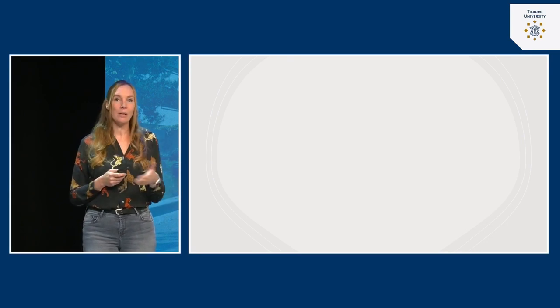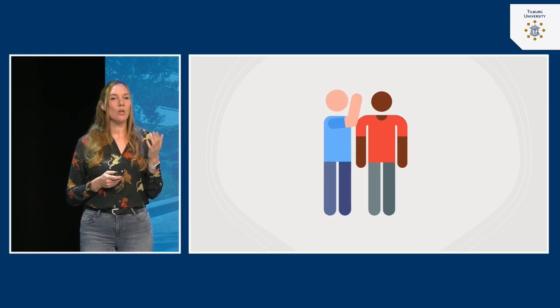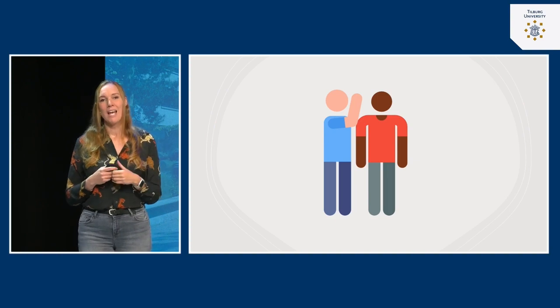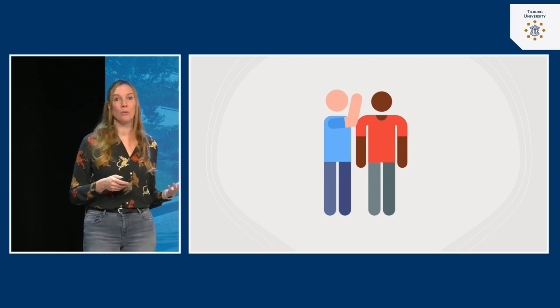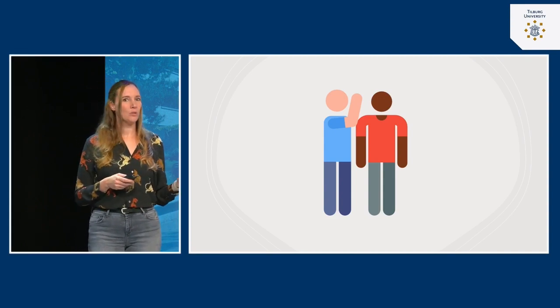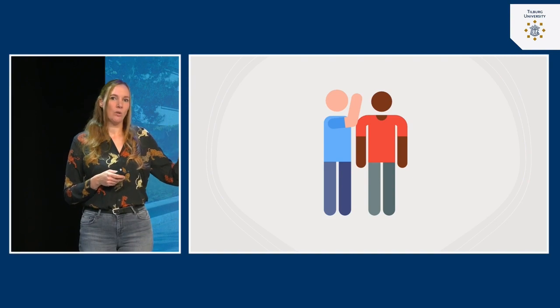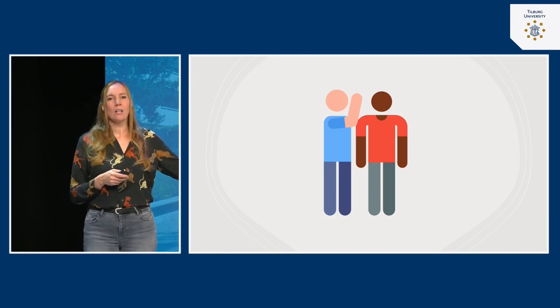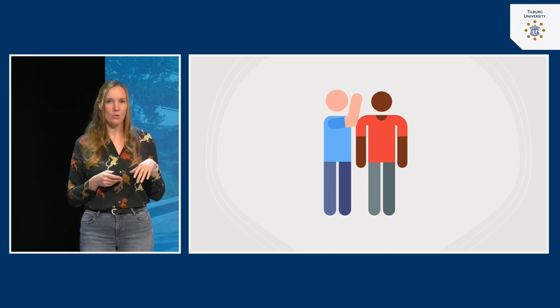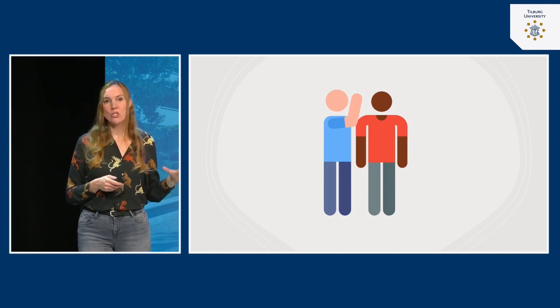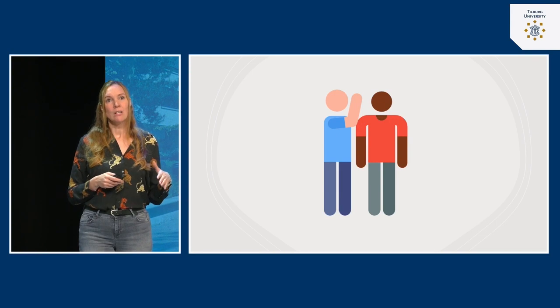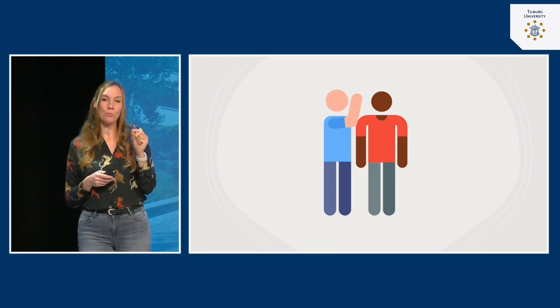Priming happens all the time — not just with products but also with people and ideas. Imagine you're about to get a new boss, and an acquaintance tells you: 'I heard rumors that he's not a nice person — very dominant, directive, with a merciless leadership style.' This is priming. The concept of a nasty boss becomes activated in your mind.